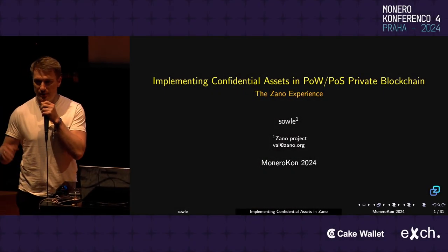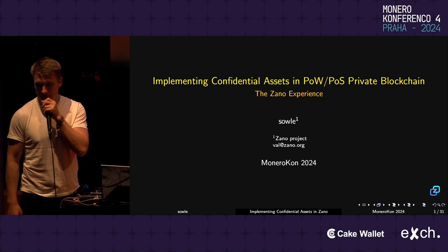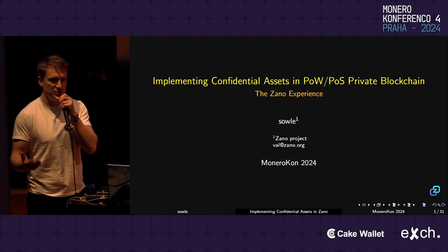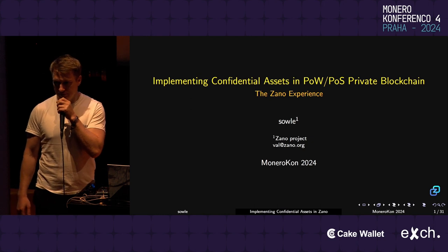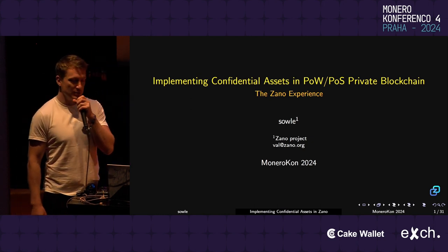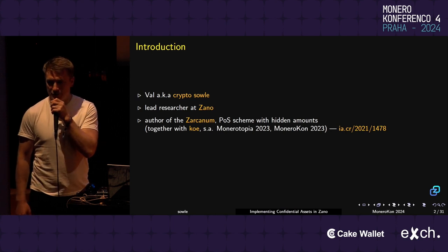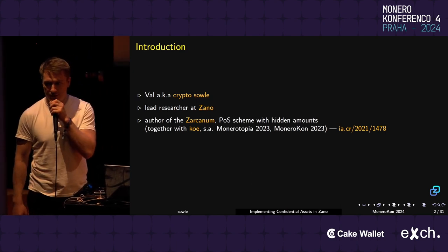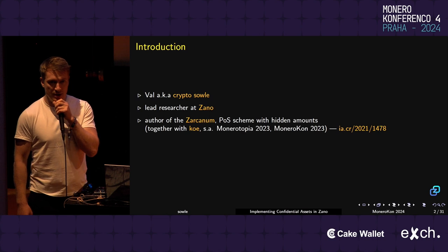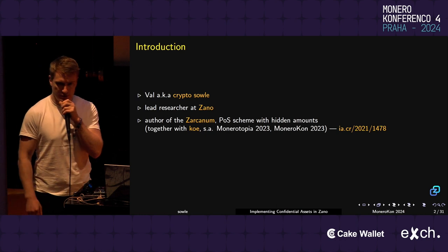Hi everyone. I'm going to talk about implementing confidential assets in ZANO. Confidential assets are basically tokens that we can deploy and transfer in an anonymous way. My name is Val, also known as CryptoSoul. I'm a lead researcher at ZANO and also the author of Zeracanum. Last year, together with Core, the developer of Monero, we presented Zeracanum at Monerocon and previously at Monerotopia.